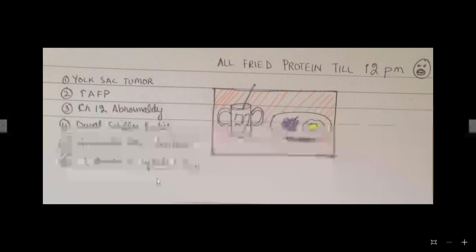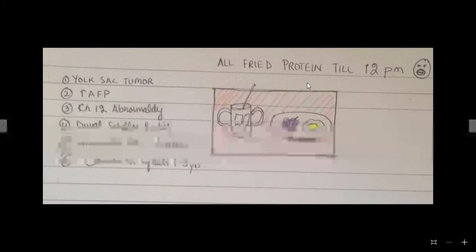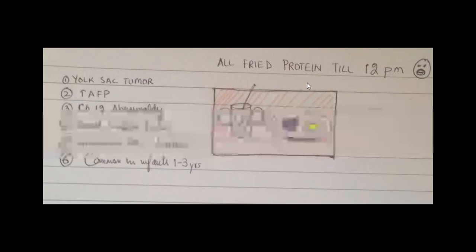All fried protein in the banner is showing that this tumor is associated with increased alpha fetoprotein. So all fried protein here depicts increased alpha fetoprotein.